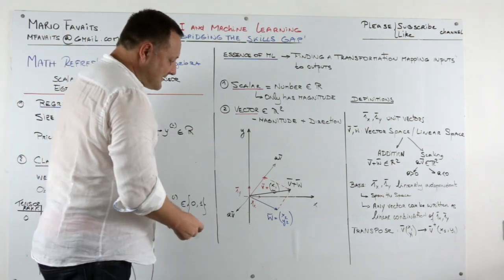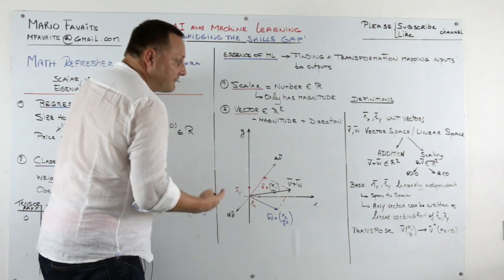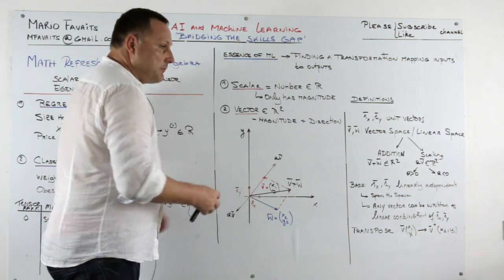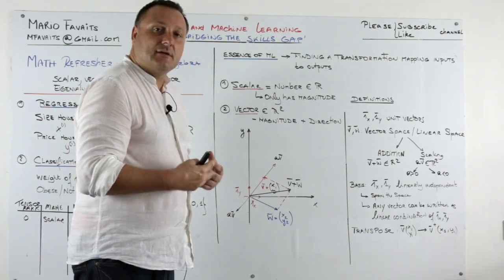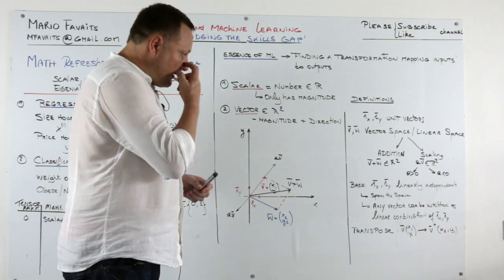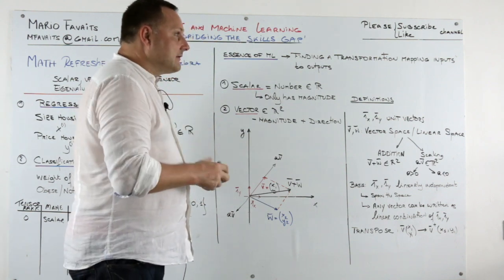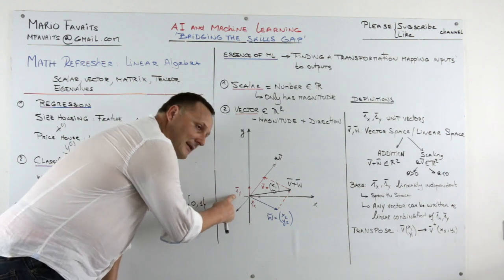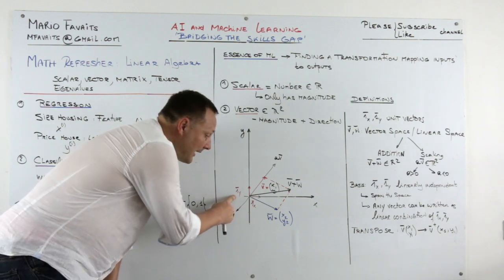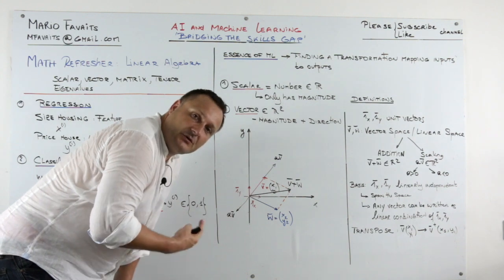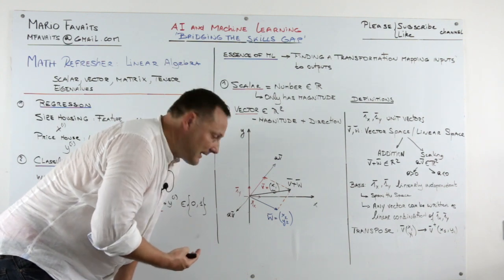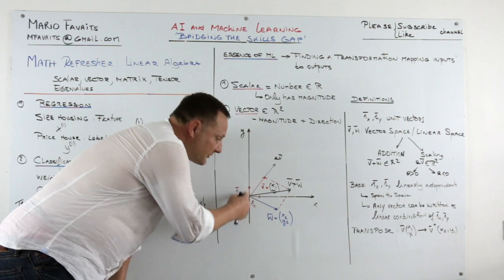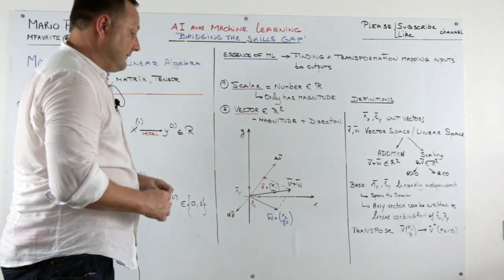Now a basis. You have 1x, 1y unit vectors. They form a basis when they are linearly independent. What does it mean linearly independent? Well it means that I cannot write the unit vector of y as a linear combination of the unit vector of x. I can't do it. They are perpendicular to each other so there is no way I can do it.